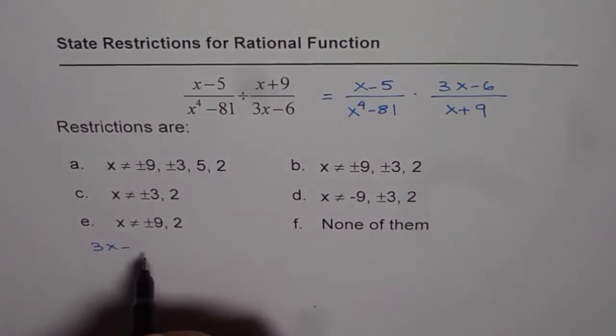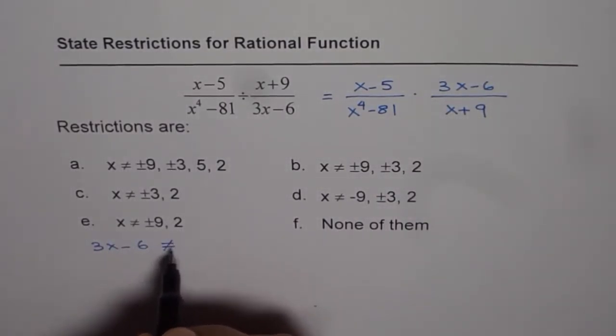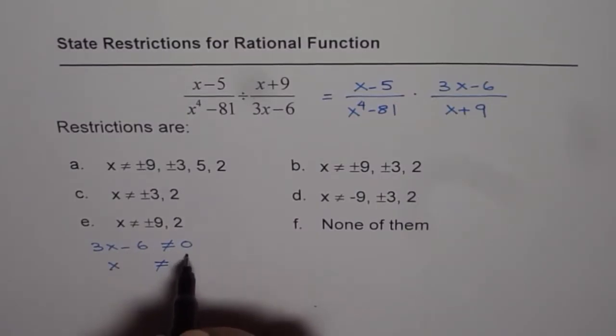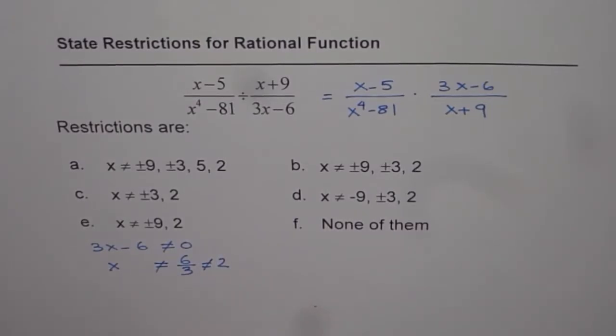3x-6 should not equal 0. That gives us x is not equal to 6/3, which is x is not equal to 2. So that is one of the restrictions.